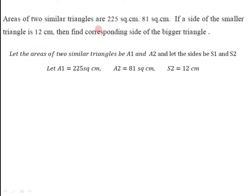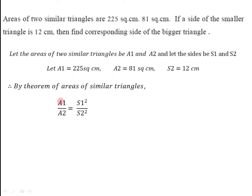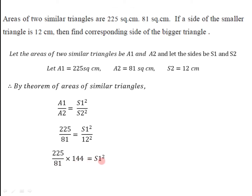Since these two triangles are similar, we use the theorem of areas of similar triangles: the ratio of areas equals the ratio of squares of corresponding sides, so a1/a2 = s1²/s2². Substituting, 225/81 = s1²/12². Taking 12² = 144 to the left-hand side gives us 225/81 × 144 = s1².